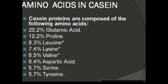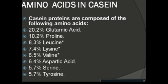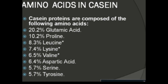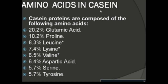What types of amino acids are found in casein? According to their percentage, the important amino acids that constitute casein include glutamic acid, proline, leucine, lysine, valine, aspartic acid, serine, tyrosine, histidine, and others.